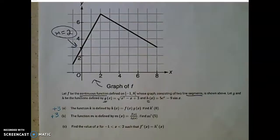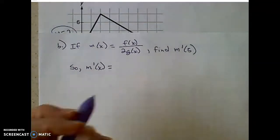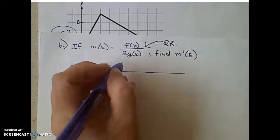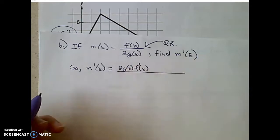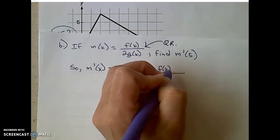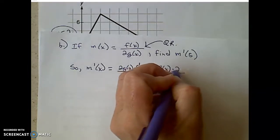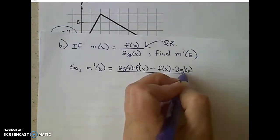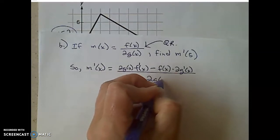Part B is also a three-point part. M of X is defined as F of X over 2 times G of X, and we're asked to find M prime of 5. Since M is a quotient, we need the quotient rule. M prime of X equals the denominator, 2 times G of X, times F prime of X, minus the numerator F of X times the derivative of the denominator, which is 2G prime of X, all over the denominator squared.